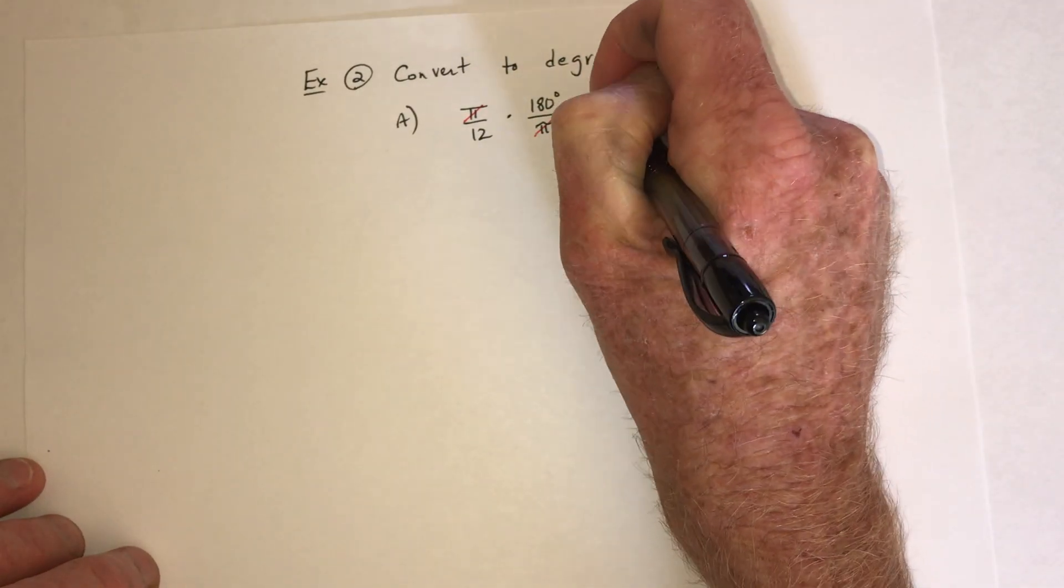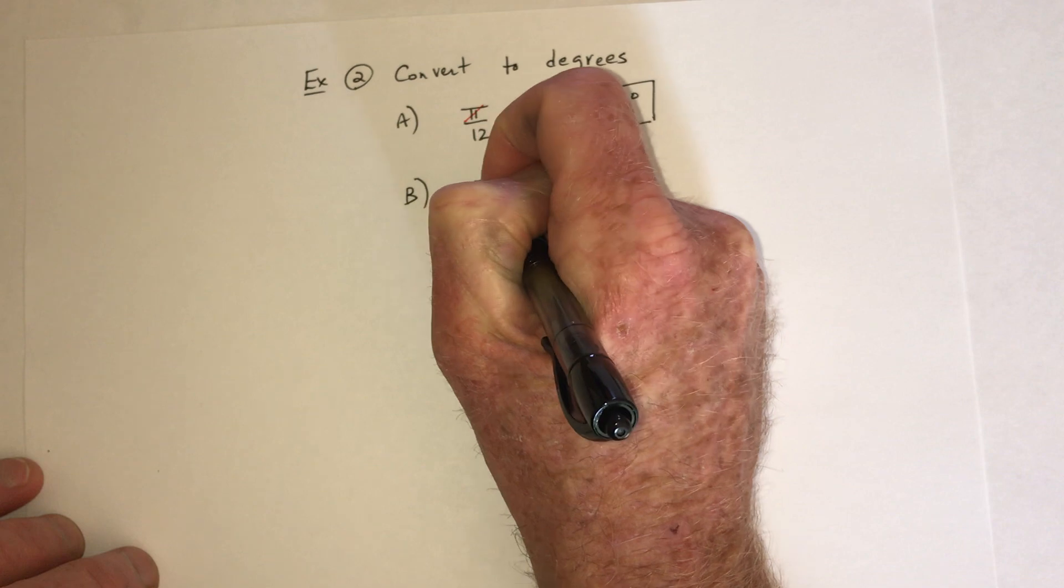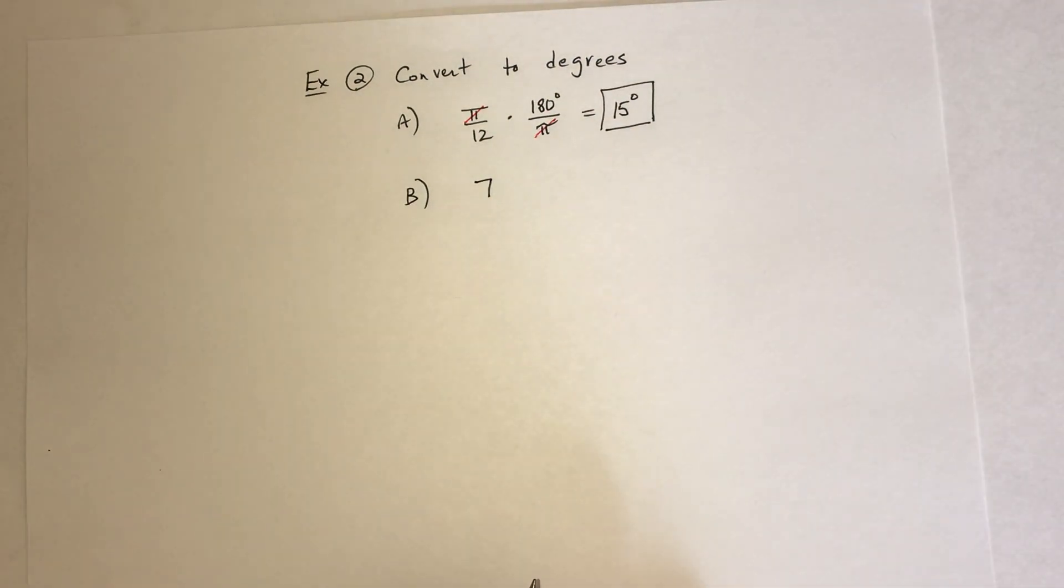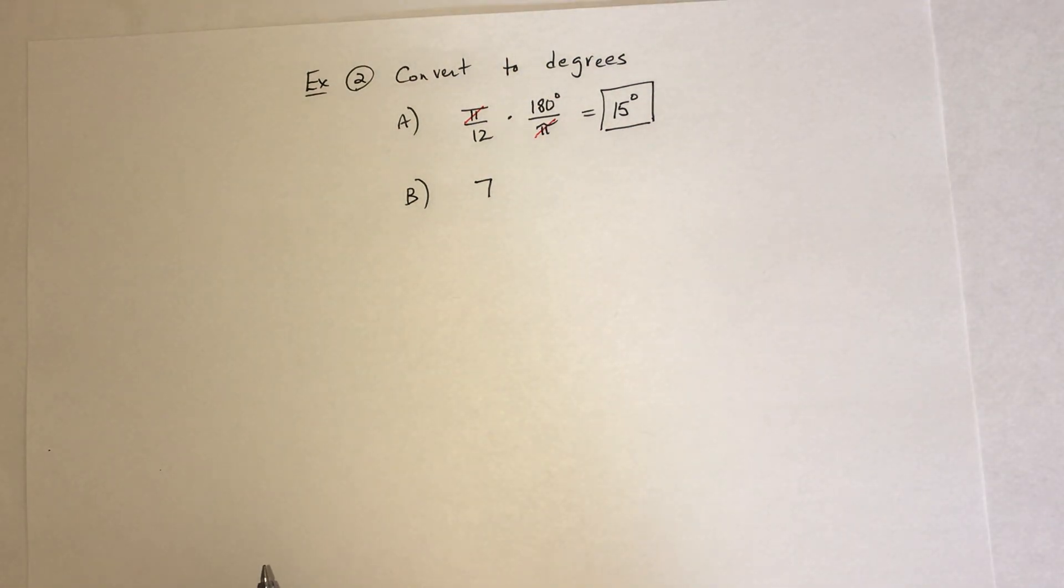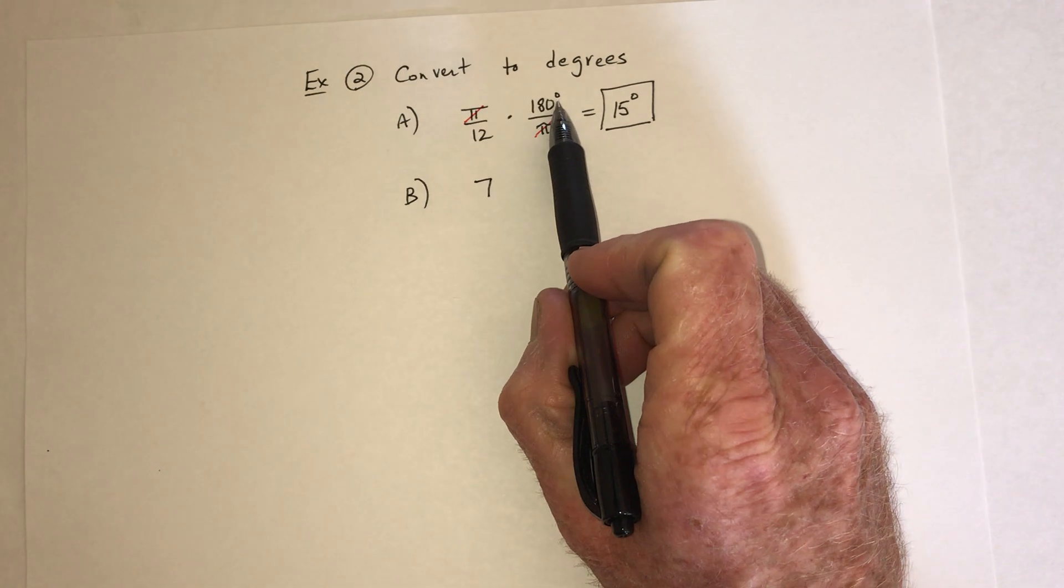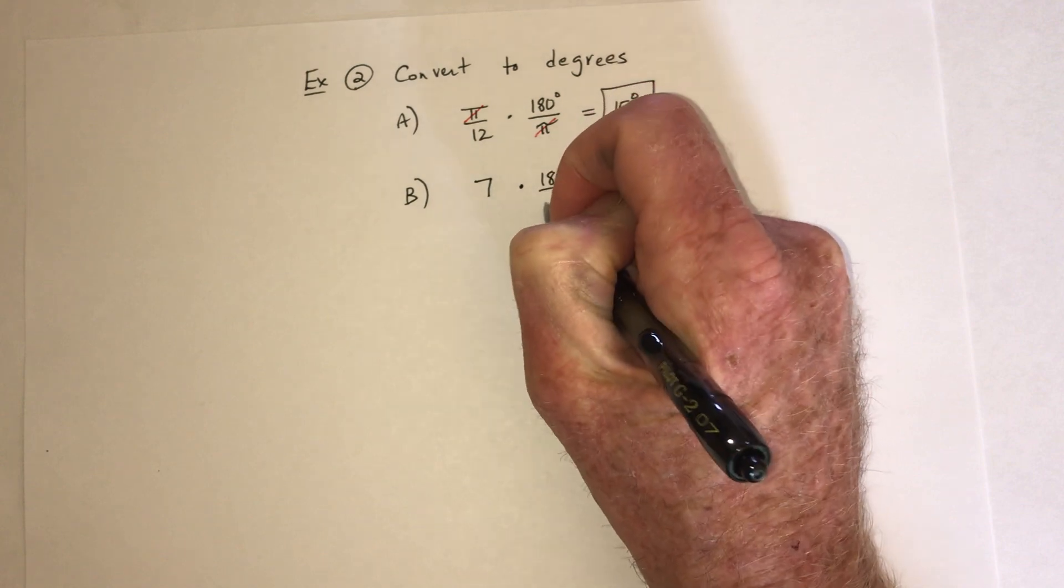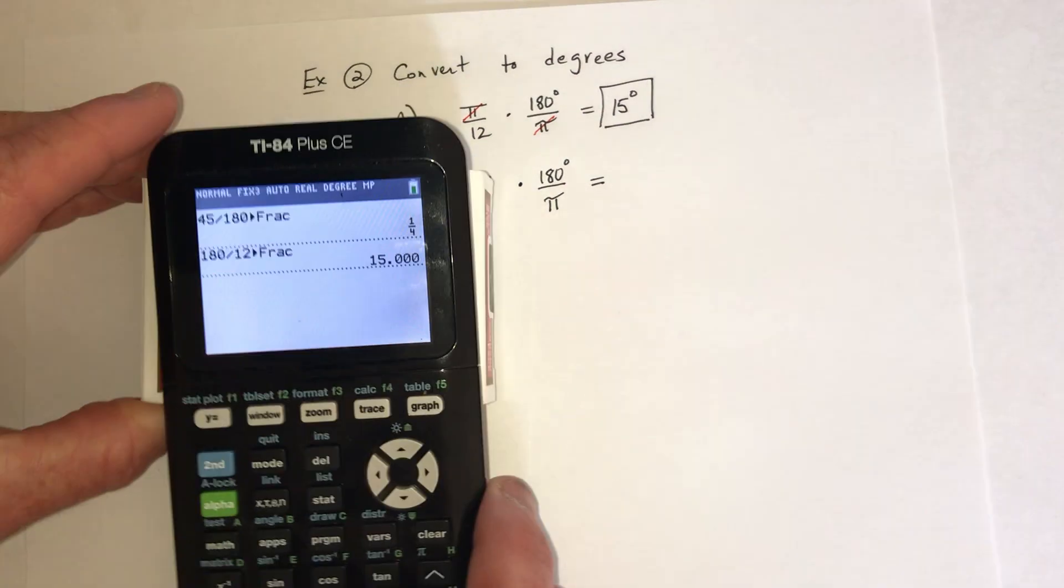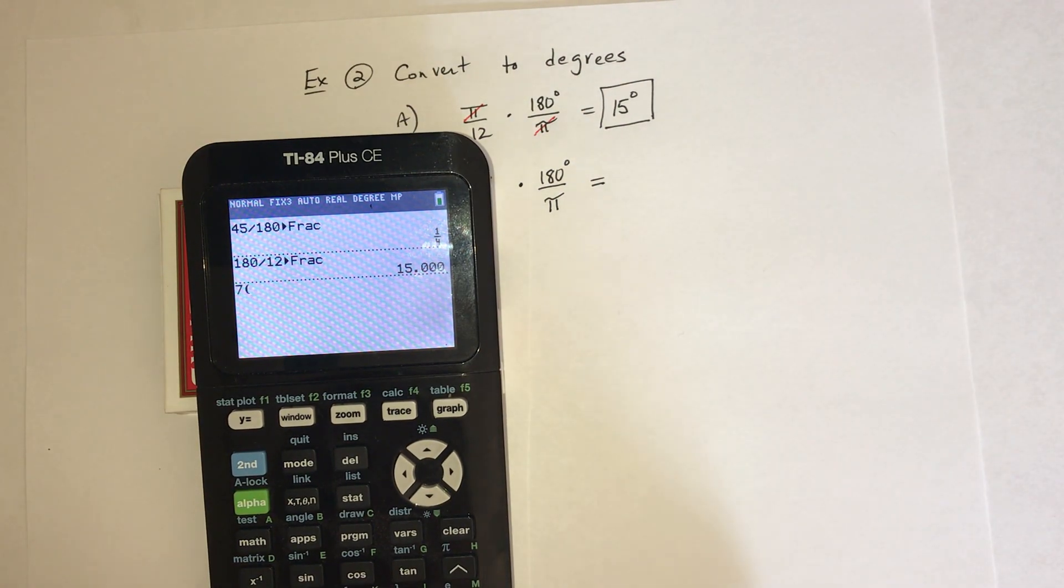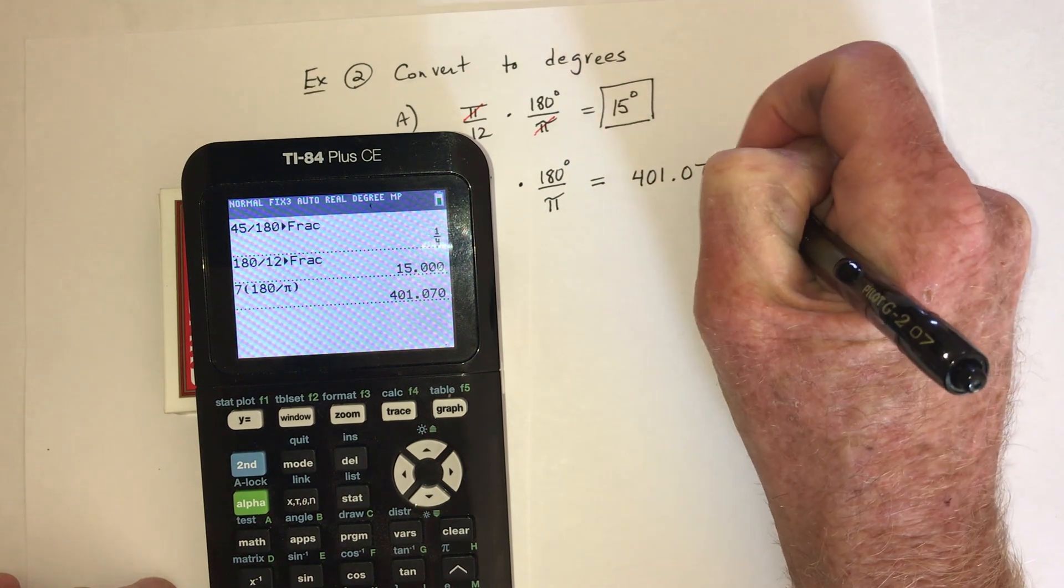And when the answer's in degrees, you do have to put that little circle above it to indicate degrees. Then, just a moment ago, I was saying what's sine of 7. So because that doesn't have degrees, that's in radians. Even if it doesn't have a pi, if the little circle is missing, that's in radians. So you do the same thing, multiply by 180 degrees over pi. And nothing cancels out, so I just need to do this on the calculator. So 7 times 180 divided by pi, and that is 401.07 degrees.